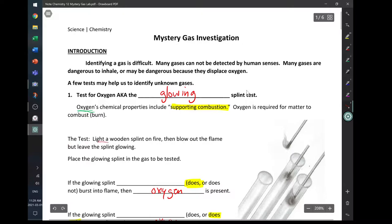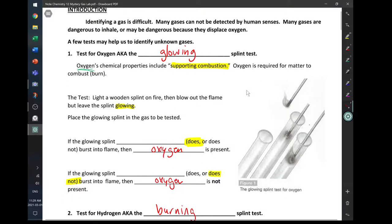So our test is we're going to light a wooden splint on fire. We blow out the flame but we leave the splint glowing. That's why we call it the glowing splint test. It looks like a little orange ember. And then we place the glowing splint, the little ember, in the gas that's to be tested. If the glowing splint does burst into flame then oxygen is present. And if the glowing splint does not burst into flame then oxygen is not present.